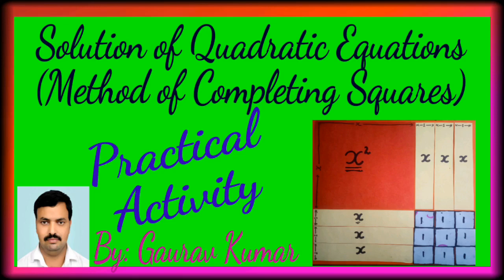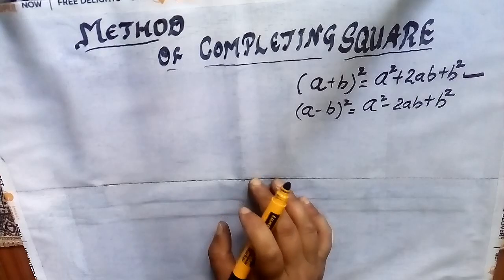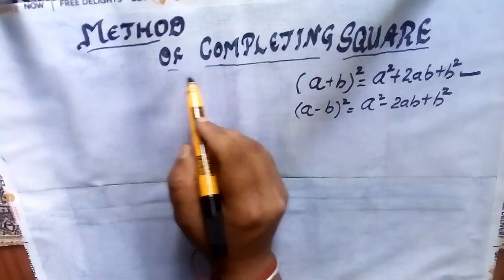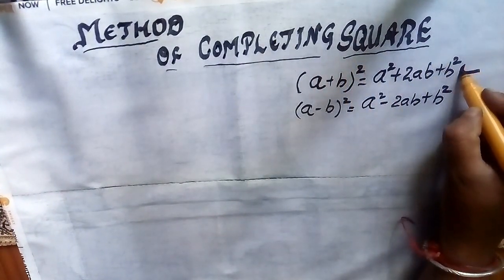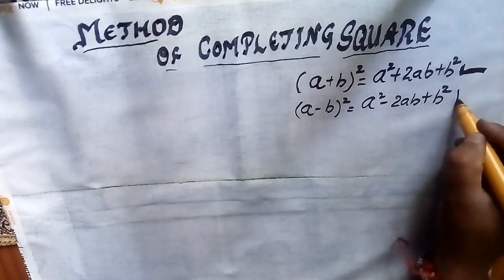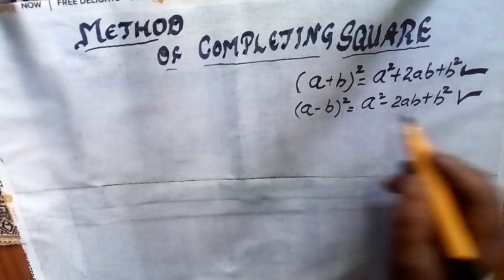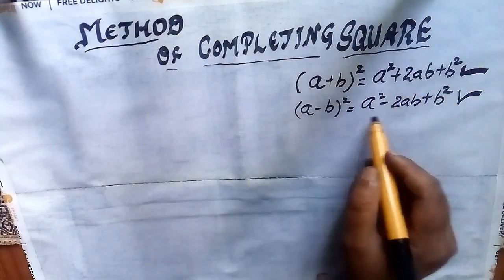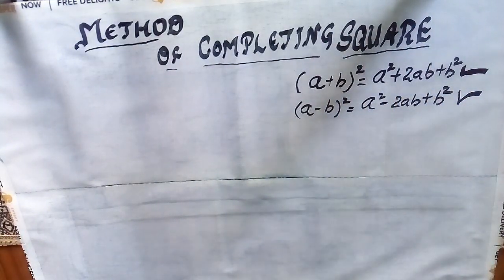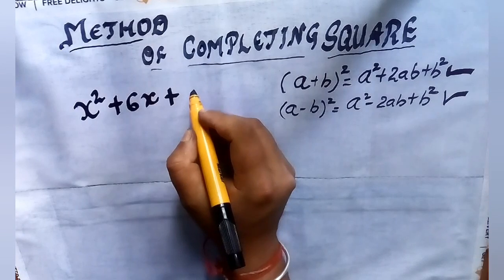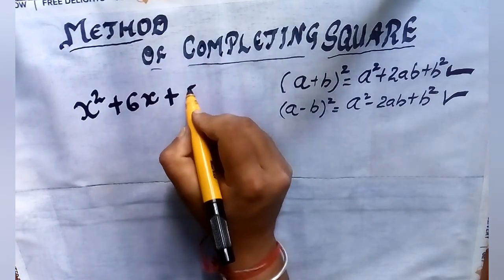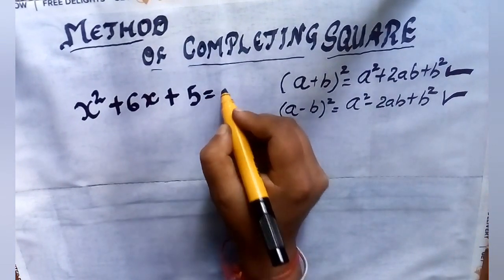Namaste everyone. Today I am going to discuss the solution of quadratic equations by the method of completing squares. For that I am using one practical activity also. So watch the video till the end — there will be an amazing question for you. Before starting the method, you should know these two identities: (a + b)² and (a - b)², which you have studied from eighth class.